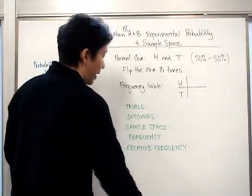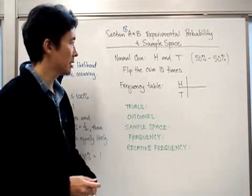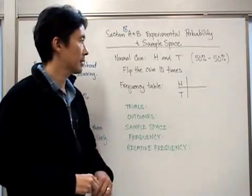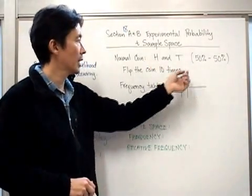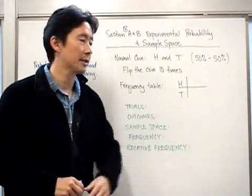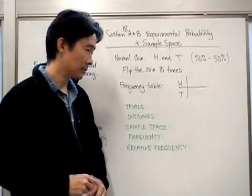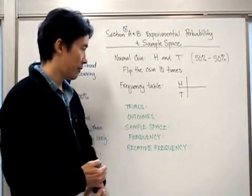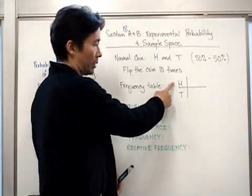Let's say for example that we have a normal coin — heads and tails — and there's an even chance of getting a head or a tail, so it's a 50-50 chance. Now let's say we flip this coin ten times.